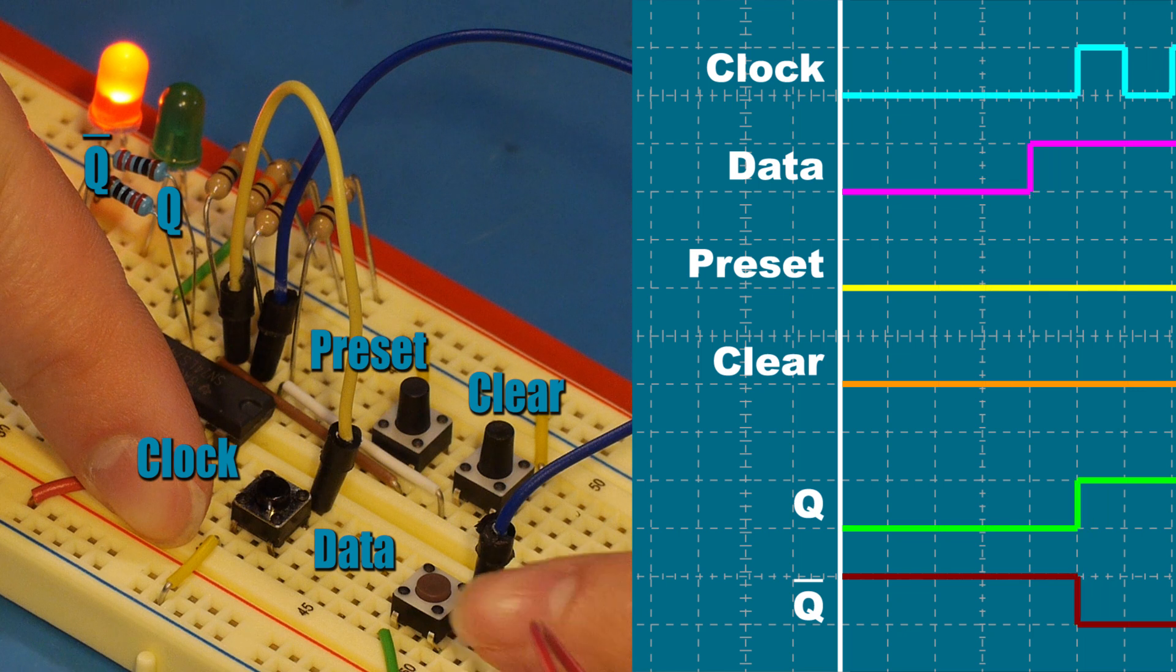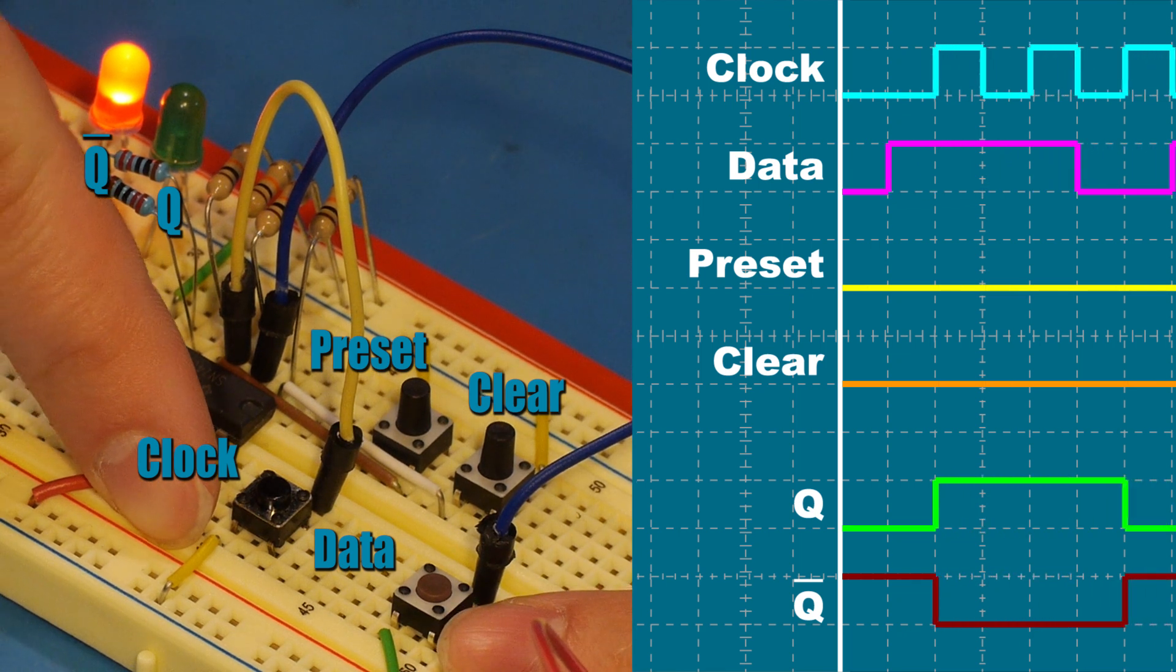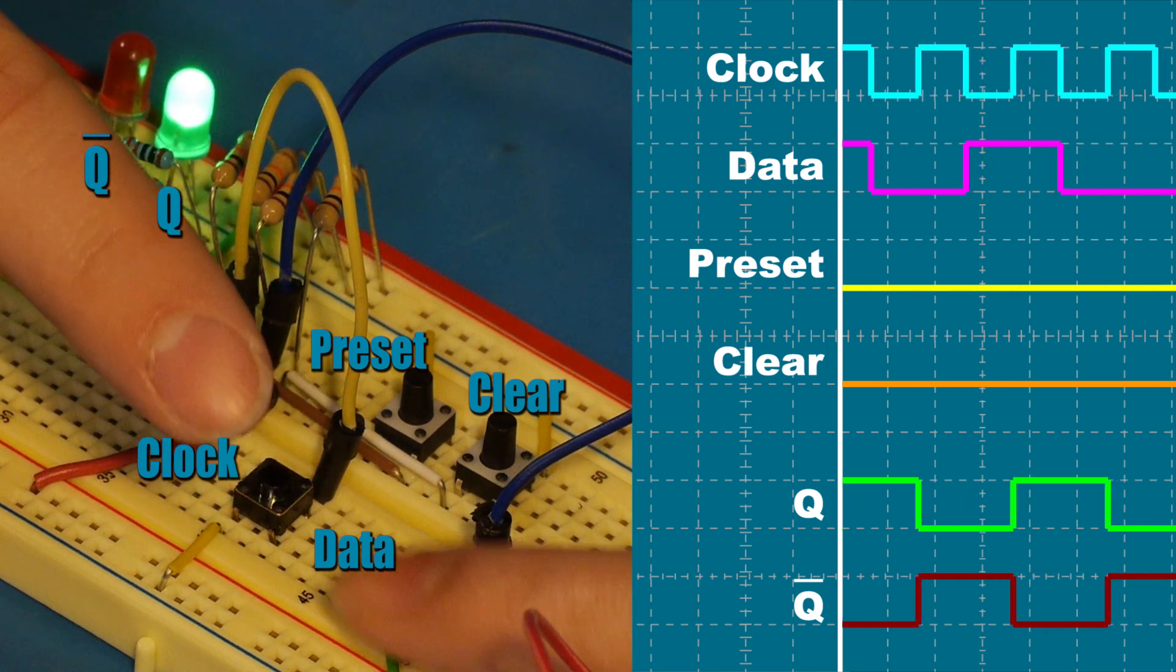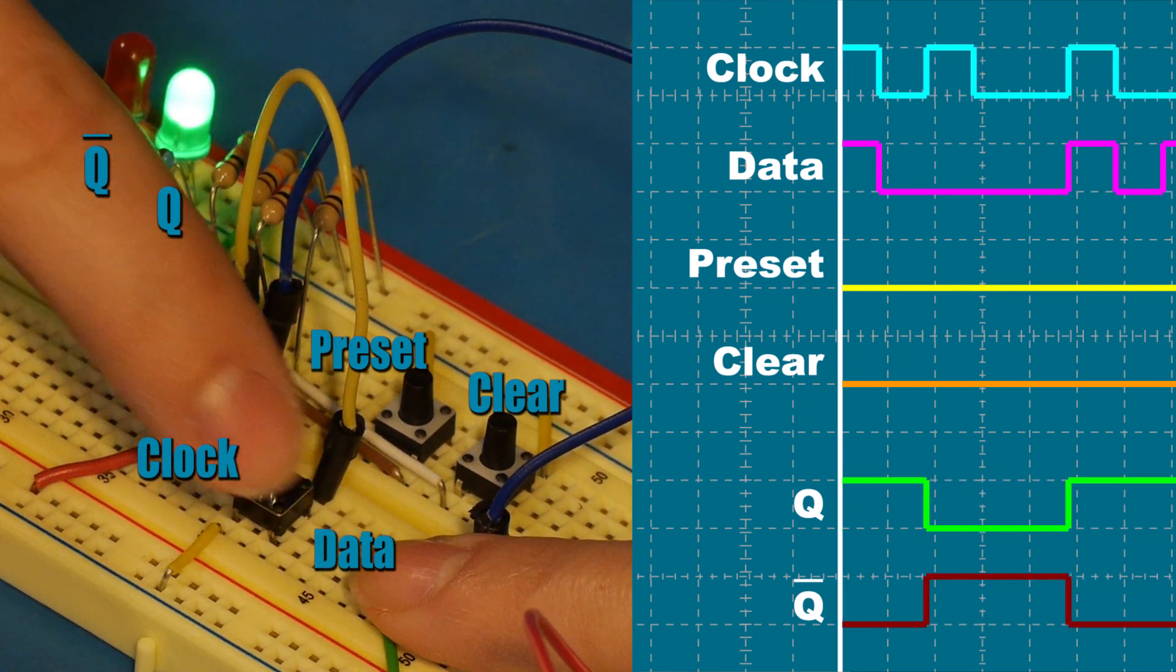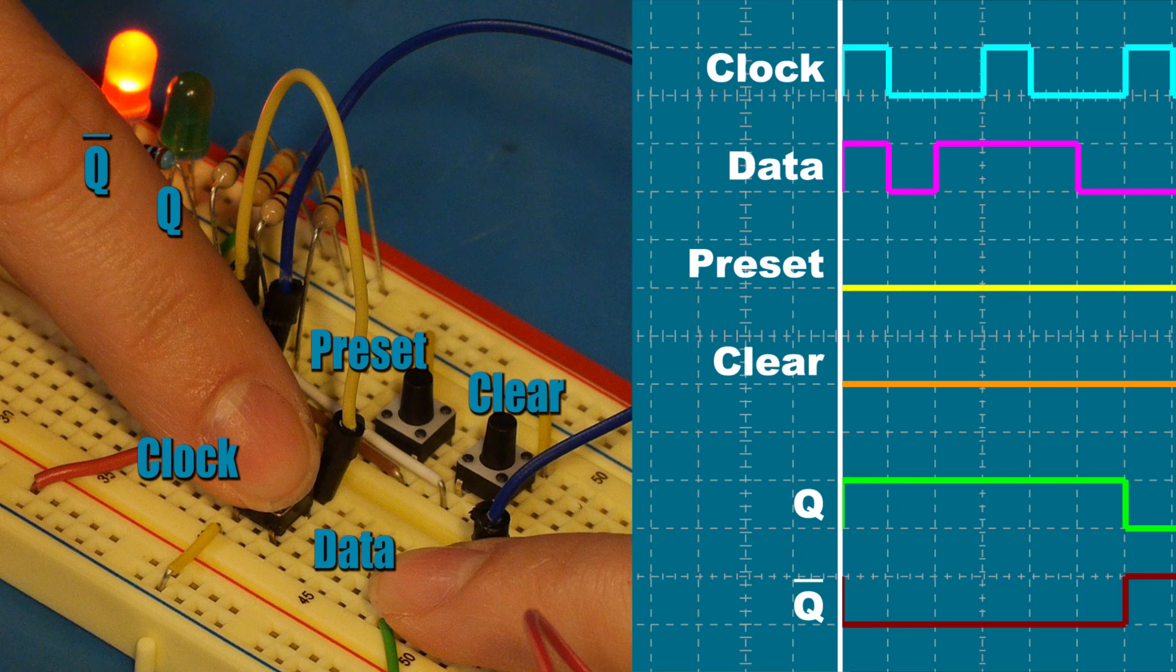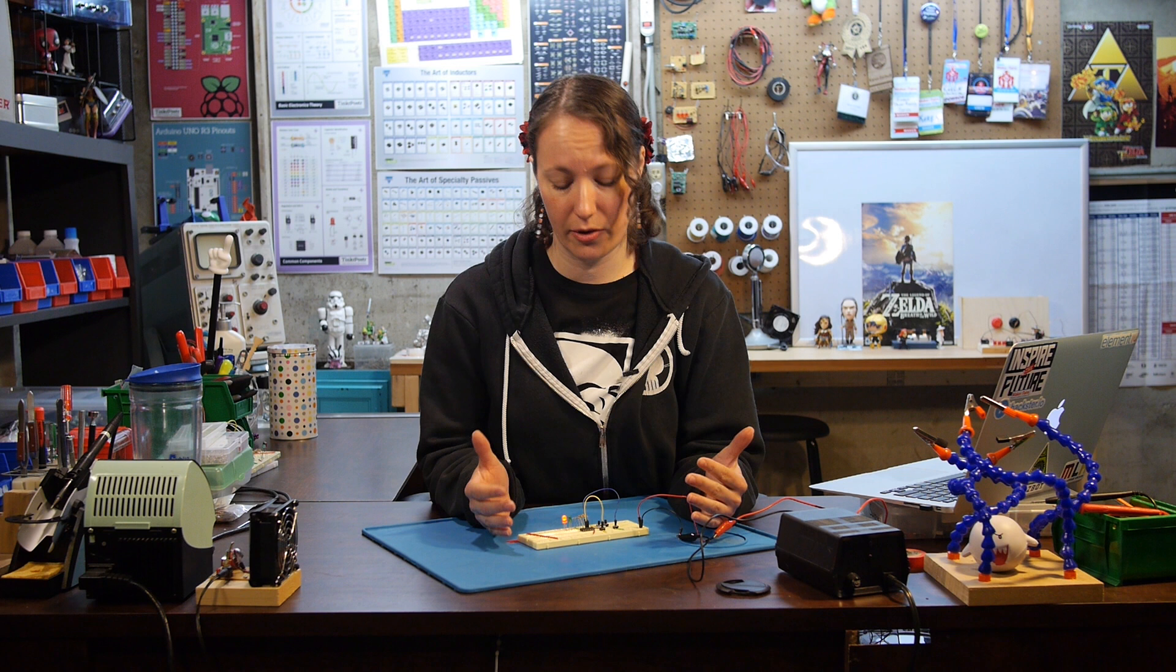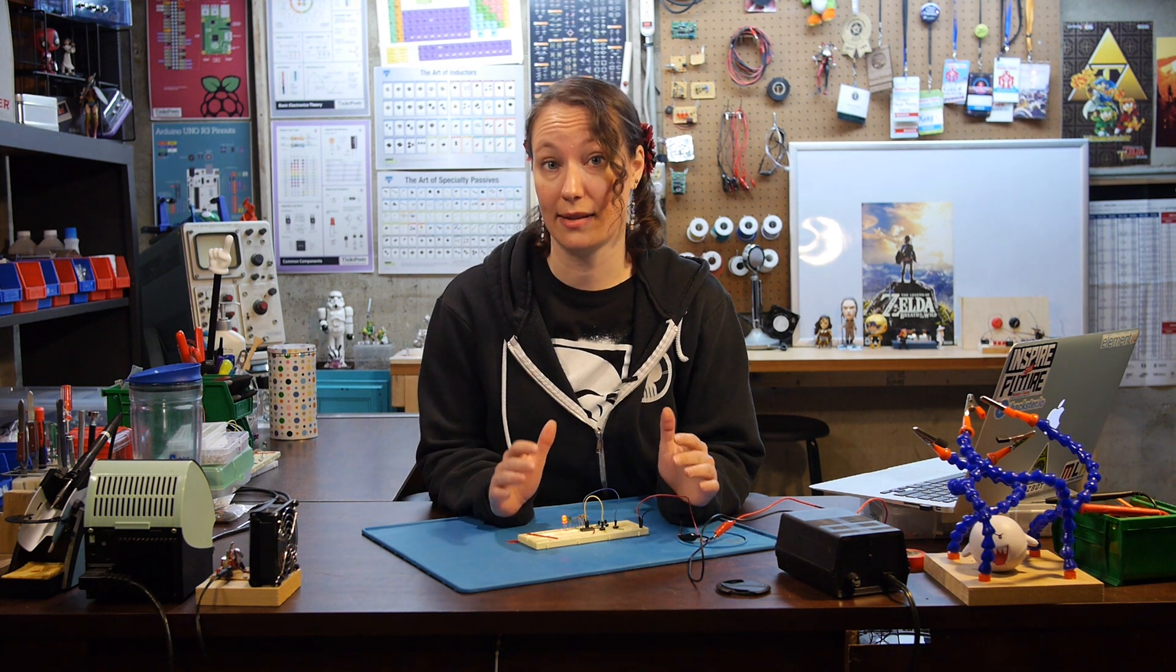Clock acts as a valve for data, sending the data signal at the positive edge of the clock pulse. So the output is only changed by the data signal if the data signal is different than the current status of the output, and only when the clock pulses. Hopefully you've got a good understanding of how our inputs affect our outputs. Now let's turn it into a toggle.